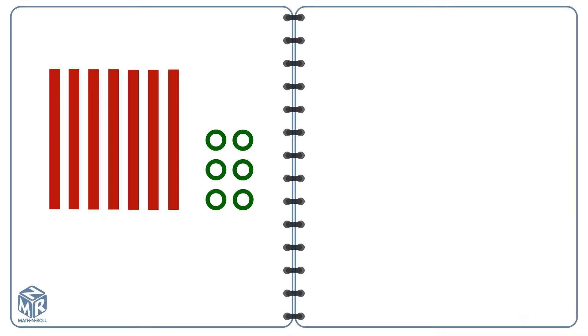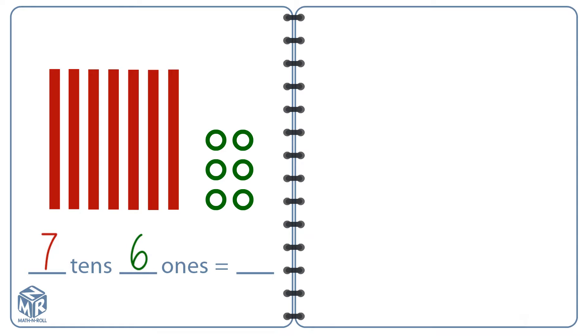Let's try another one. We have seven bars. Each bar represents one 10, so we have seven 10s. We also have six circles. Each circle represents a 1, so we have six 1s. We can write seven 10s and six 1s as 76.